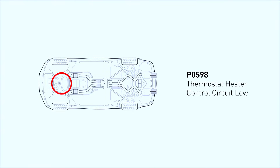This code indicates that the feedback voltage of the thermostat is somehow outside of the norm, whether that means the voltage is zero or just simply outside of the normal range. You may also be interested in P0599 thermostat heater control circuit high, and more about the P0597 code as well.